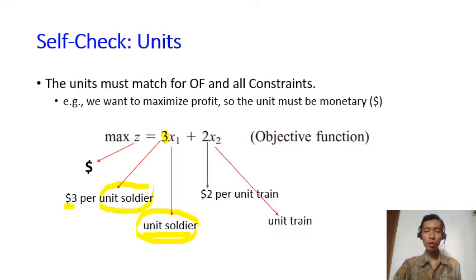Same thing for trains: 2 is 2 per unit train, x2 is the number of trains, so you can be sure that this right hand side part is in dollars and the left hand side part is also in dollars. So at least from the terms of units, your formulation is already okay.